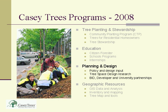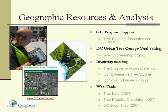Geographic Resources — this program started as GIS and IT because we were a support program at the inception of KC Trees. We did a lot of mapping and data collection, but we've grown a lot in the past five years. The urban tree canopy goal setting could be a whole separate brown bag in itself, so I'll skip that and focus on our inventory program and the web tools in this talk.